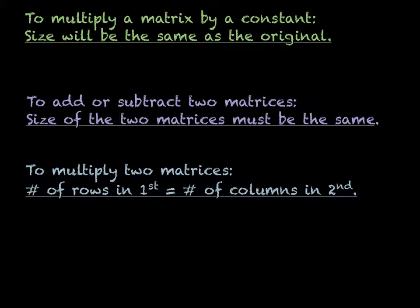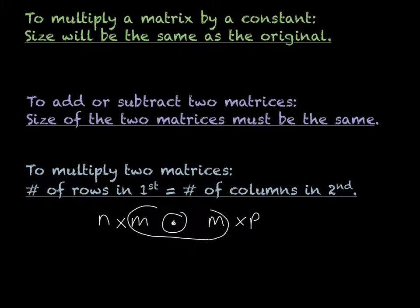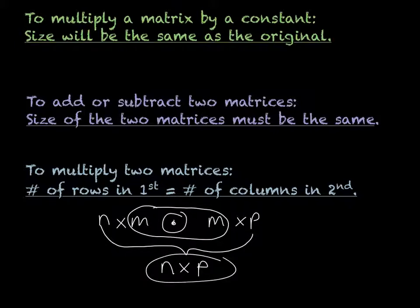So what this means is if we have our first matrix to be n by m, and our second matrix we're trying to multiply is m by p, then if the two middle ones are the same, it works, and your resulting matrix is n by p. So that's how you can actually figure out the size of a matrix when you multiply them together.